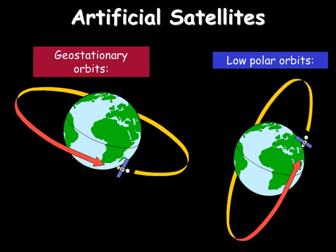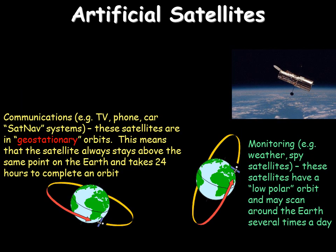There are two types of artificial satellites: geostationary satellites and low polar orbit satellites, which have different orbits. Geostationary orbits are around the equator because we need geostationary satellites to always be above the same point on the Earth. So it must take 24 hours to complete its orbit, which is very useful for communications. Satellite dishes are pointed at the same place in the sky because geostationary satellites always appear at the same point in the sky.